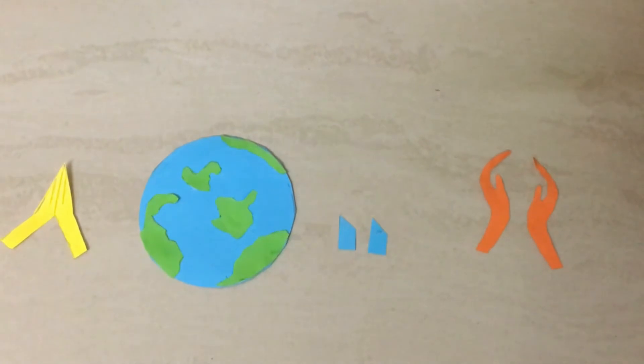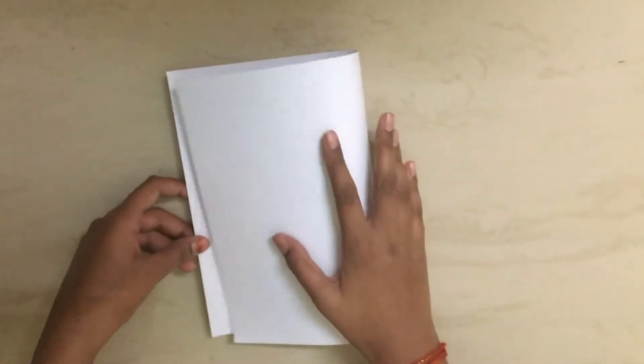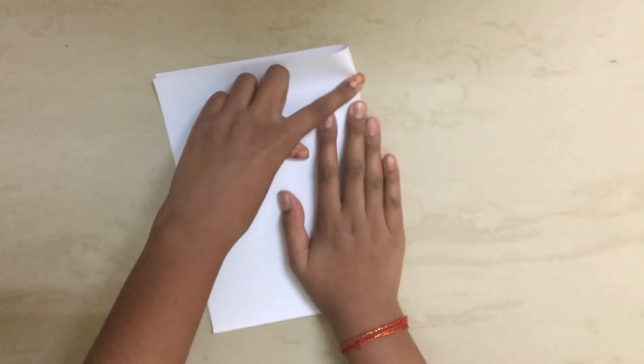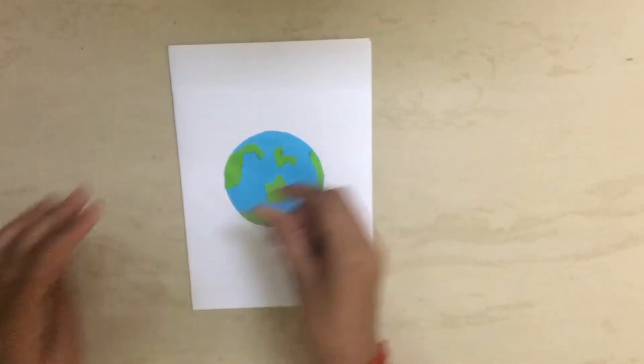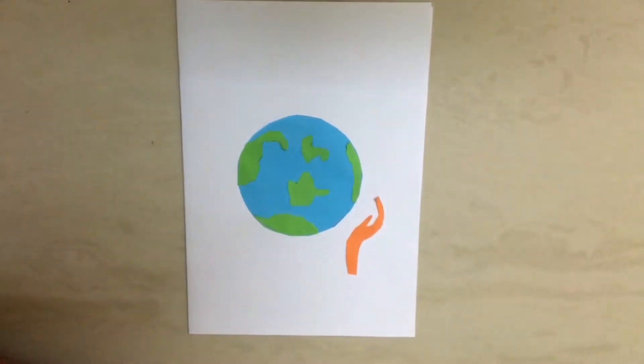Now our cutouts are ready. Let's begin with making the card. Now take an A4 sheet and fold it in half. Now over here we'll stick the Earth like this and stick the hands like this.